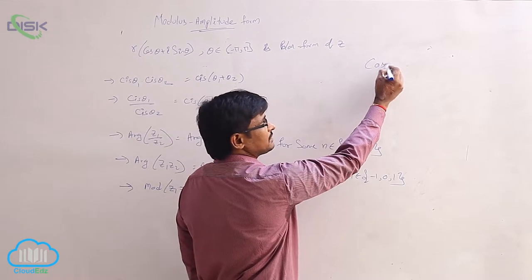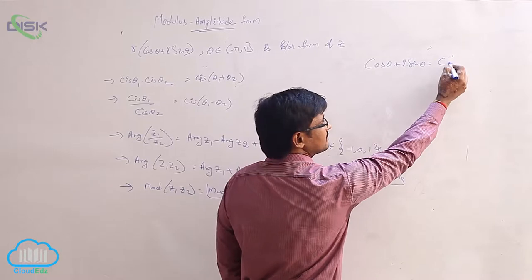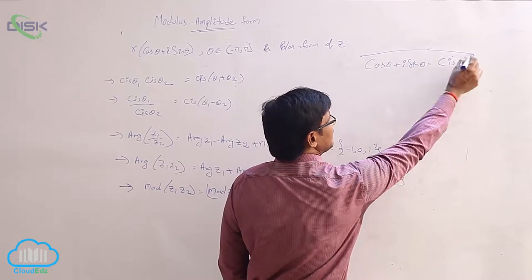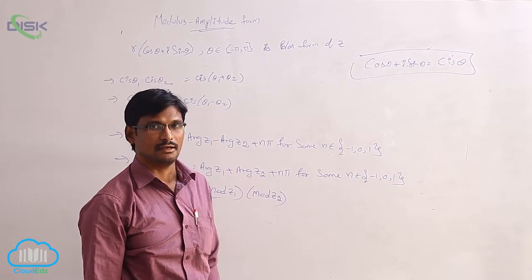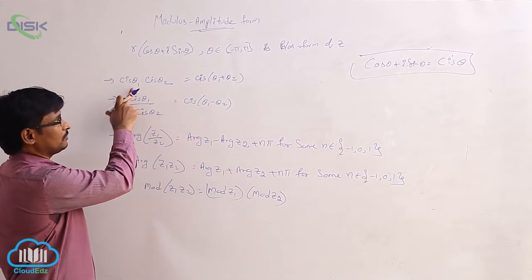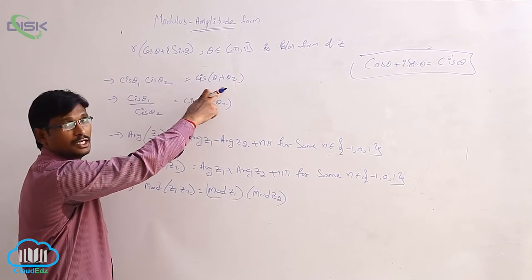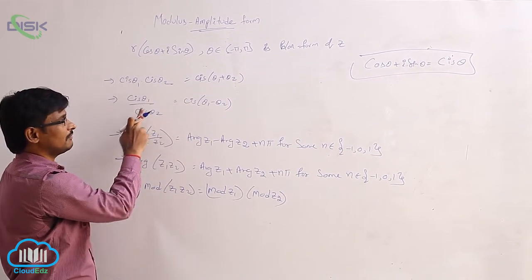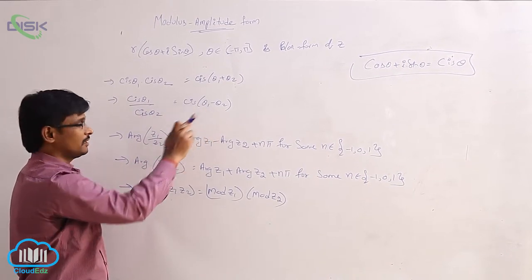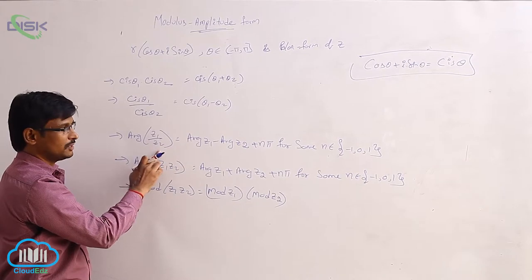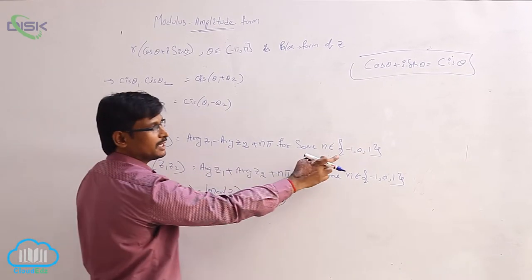cos θ + i sin θ can simply be written as cis θ — that is, C-I-S theta. If two numbers are cis θ₁ and cis θ₂, we can write their product as cis(θ₁ + θ₂), and cis θ₁ divided by cis θ₂ equals cis(θ₁ − θ₂). Also, arg(z₁/z₂) = arg(z₁) − arg(z₂).